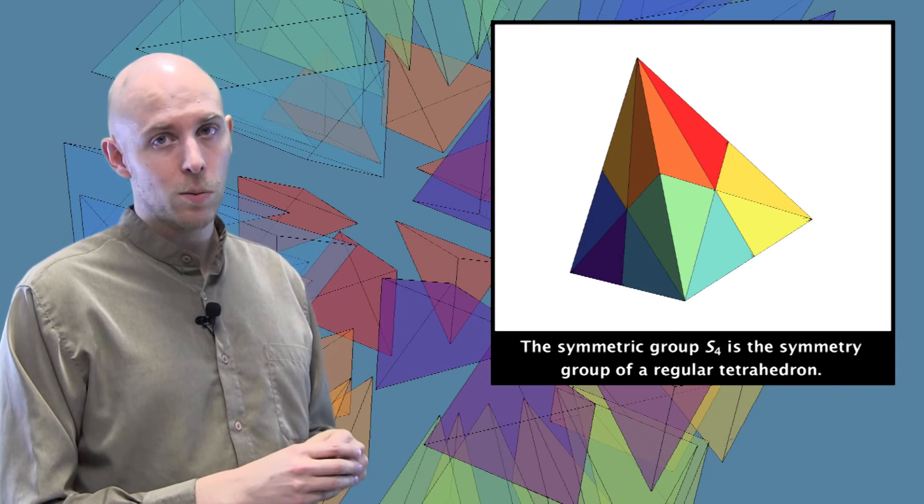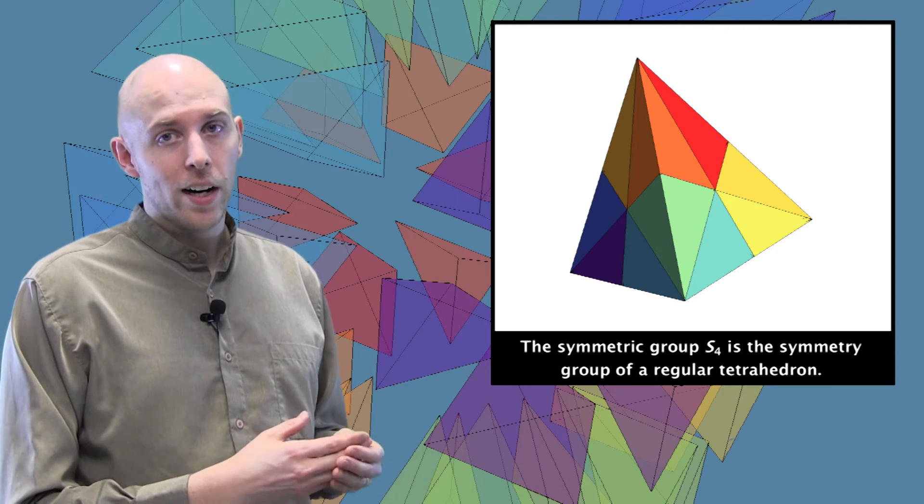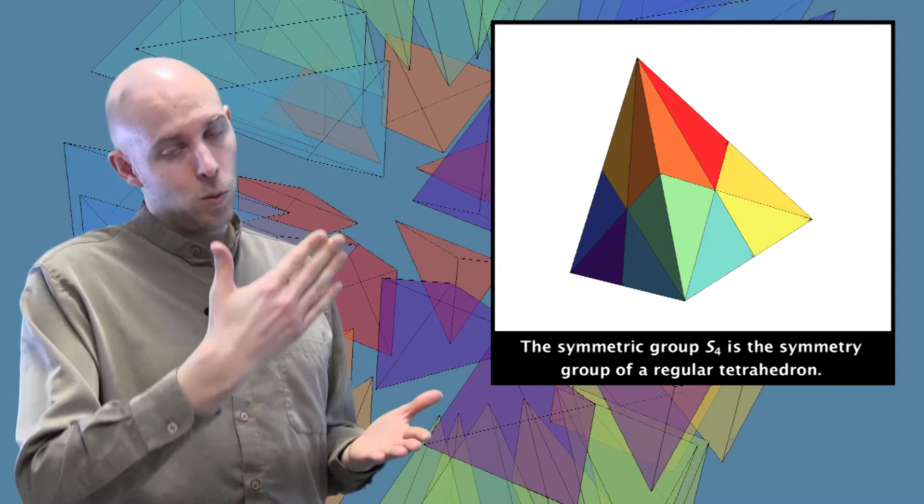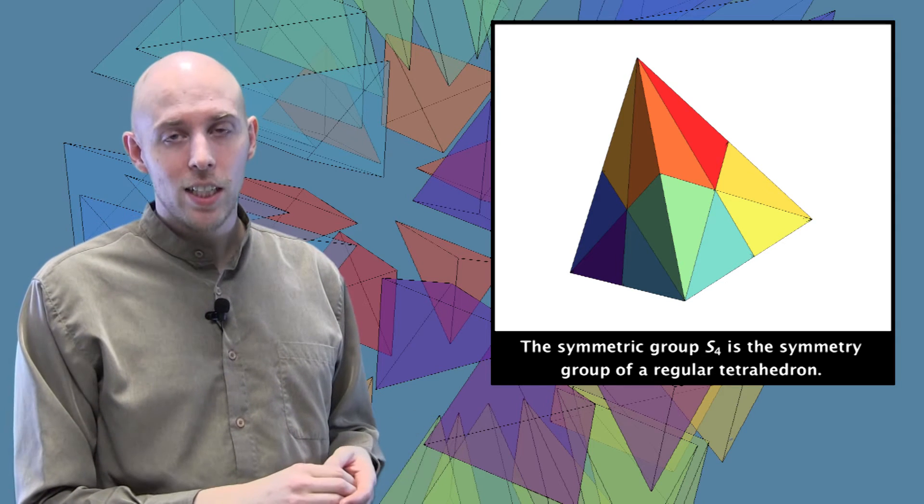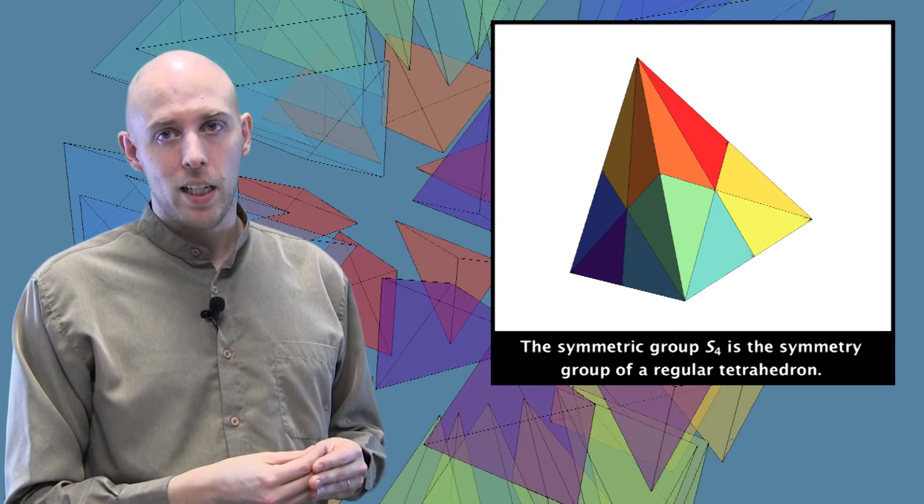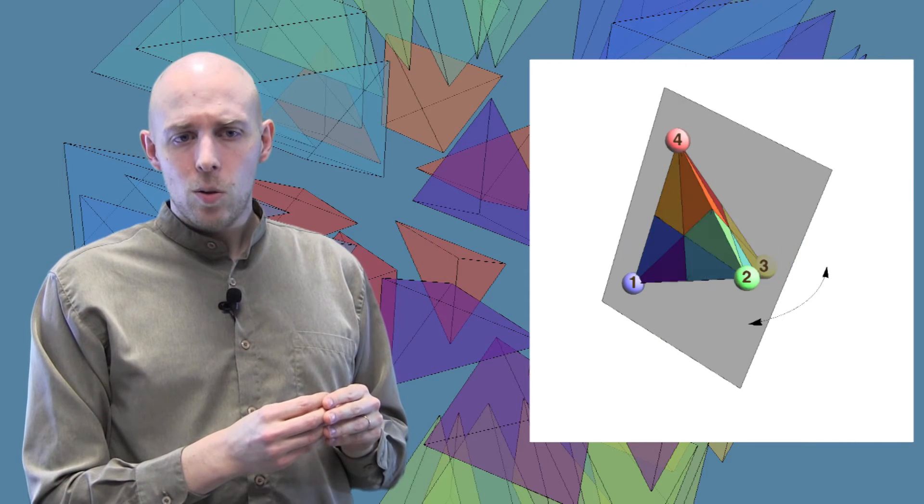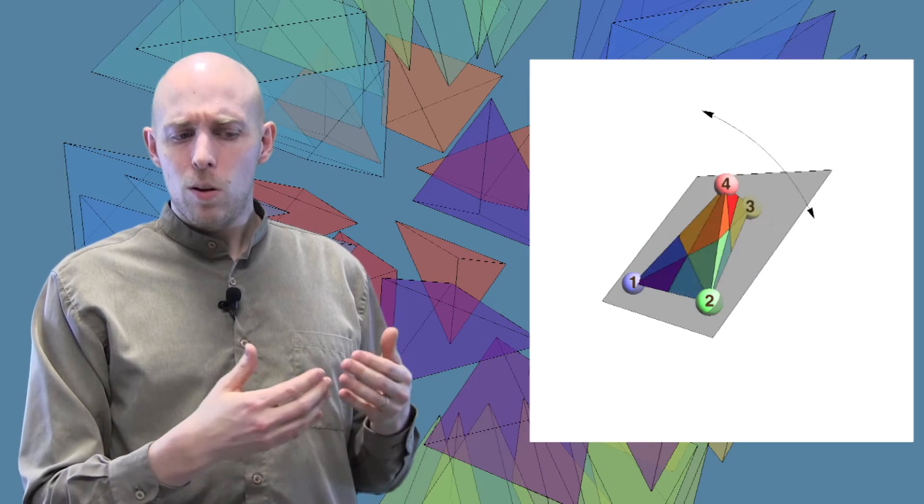The symmetric group S4 is the group of symmetries of a tetrahedron, where now a reflection corresponds to slicing the tetrahedron by a plane and reflecting about that plane. If we label the vertices of a tetrahedron from one to four and then see what happens when we do a reflection, well, the reflection slices through the tetrahedron and changes the position of two of the vertices. And so if you think about it, what that means is what we're doing with a reflection is doing a transposition of two of the vertices, so two of the numbers on the vertices.